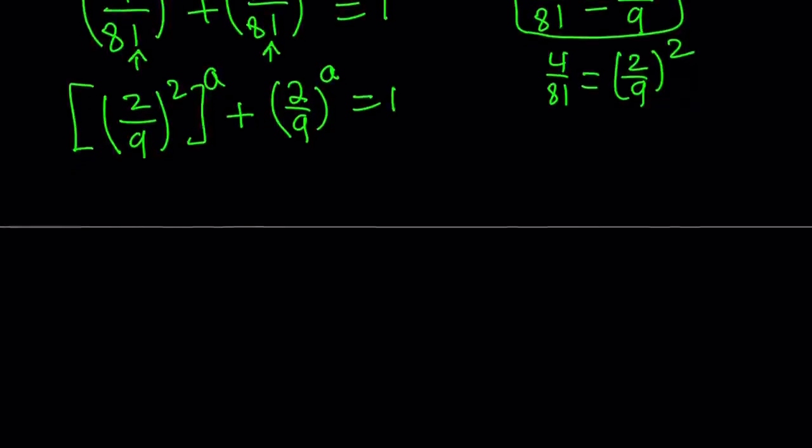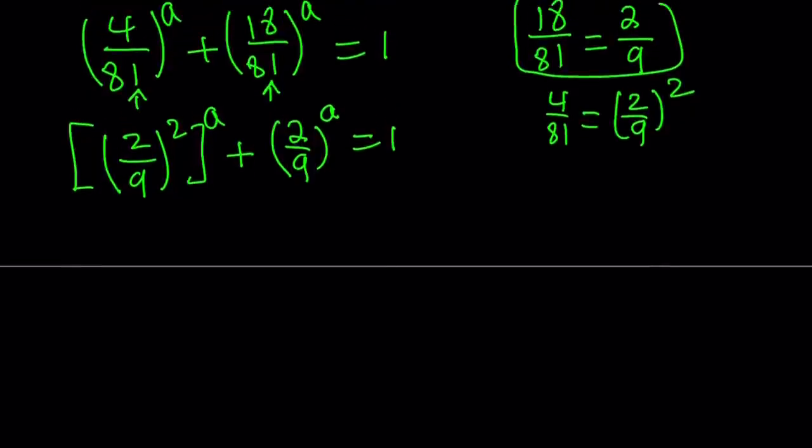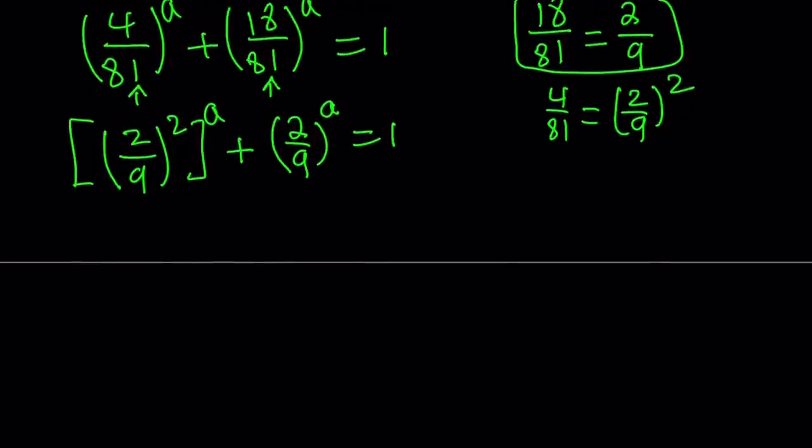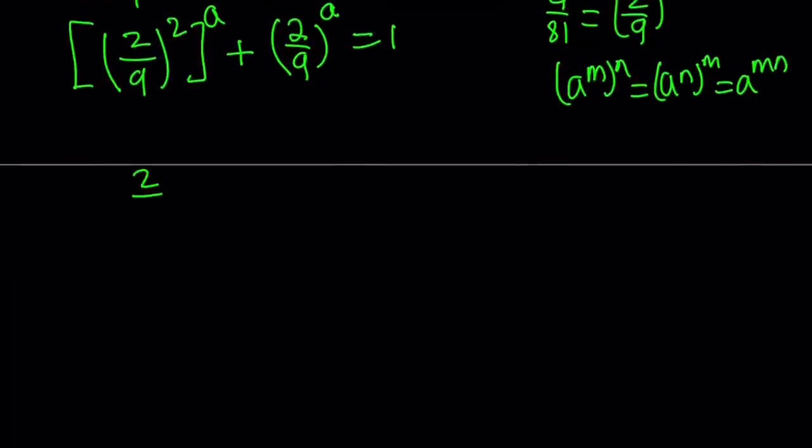Now, we have 2 over 9 to the power 2 to the power a. You can write this as 4 over 81, but that's just going to bring us backwards. So instead of that, instead of squaring the 2 ninths, why don't we raise it to the power a first? In other words, if you have a to the power m to the power n, this is the same thing as a to the power n to the power m because they're both equal to a to the power mn. And mn and nm are the same. So I can go ahead and write this as follows. 2 over 9 to the power a squared plus 2 over 9 to the power a equals 1.